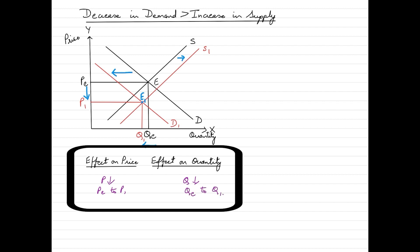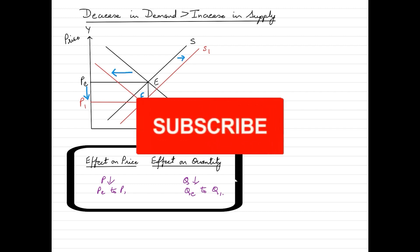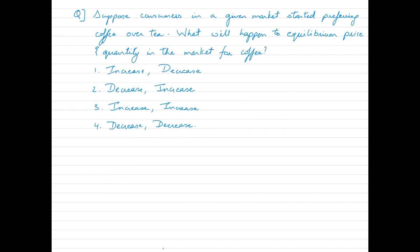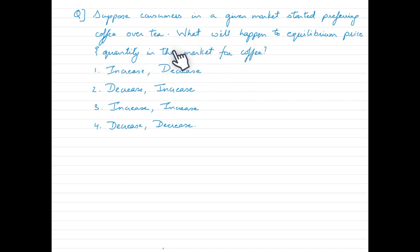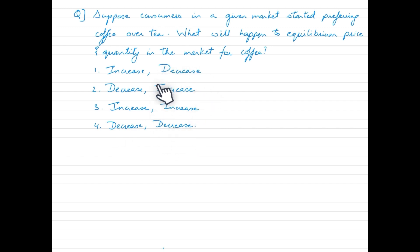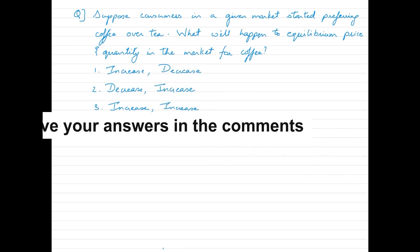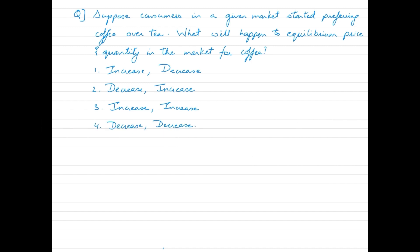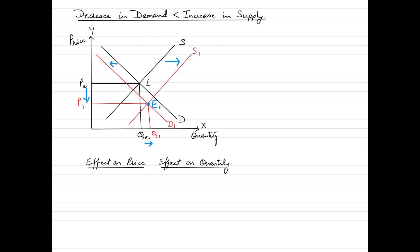If you find my videos useful, please do like and subscribe to my channel. Here's another question: suppose consumers in a given market started preferring coffee over tea — what will happen to the equilibrium price and quantity in the market for coffee? The options are: price increases and quantity decreases; price decreases and quantity increases; price increases and quantity increases; or price decreases and quantity decreases. Please give your answers in the comments below.